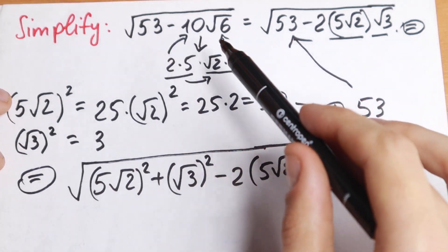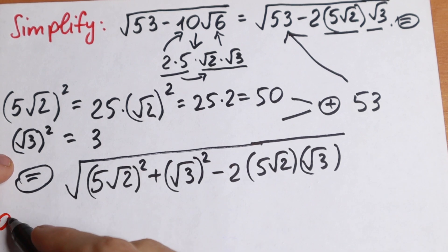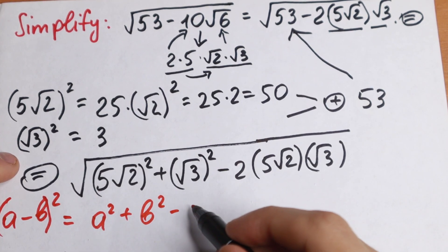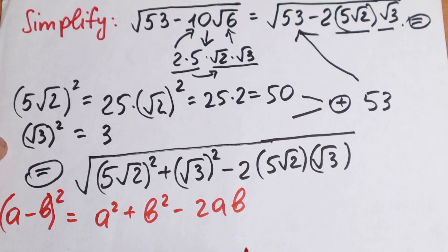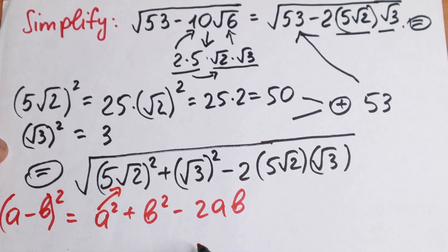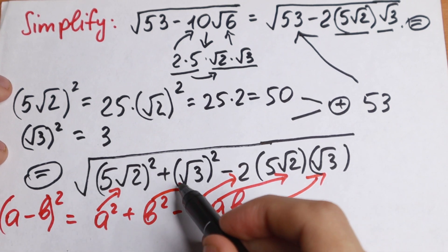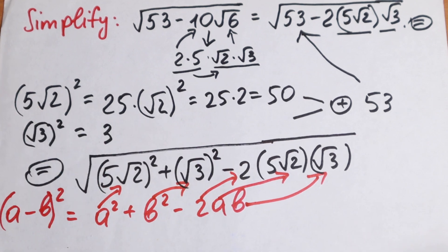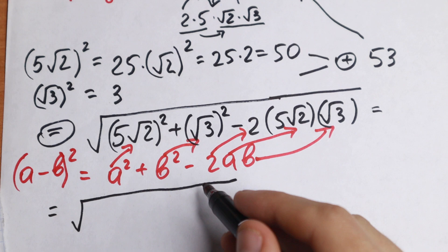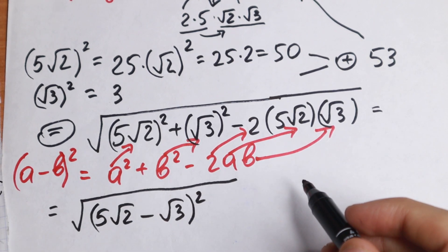Right here we have squares and a product — I want to show you that under this expression we can apply the formula for (a - b)². We know that (a - b)² equals a² plus b² minus 2ab. In our case, a is 5√2 and b is √3. So the expression inside the square root can be rewritten as (5√2 - √3)².